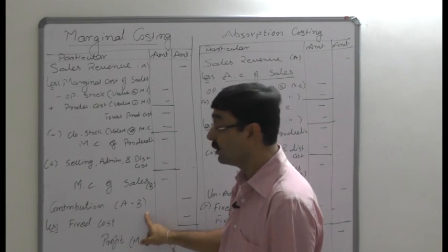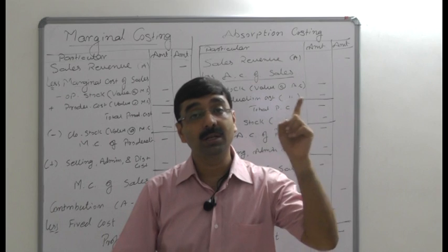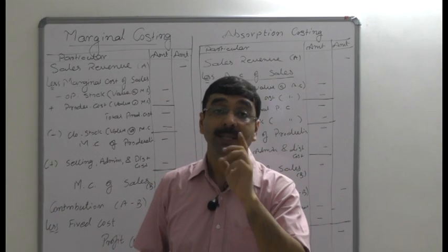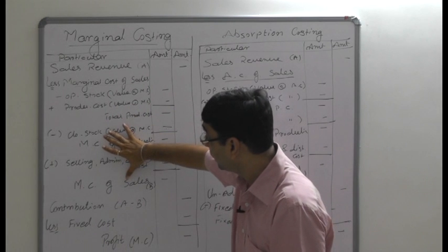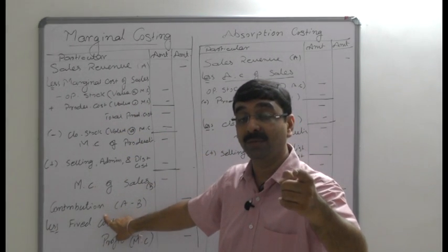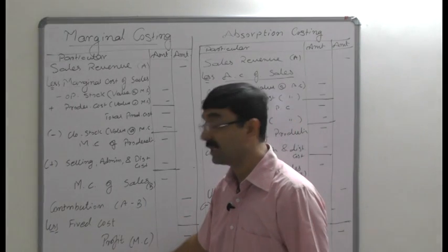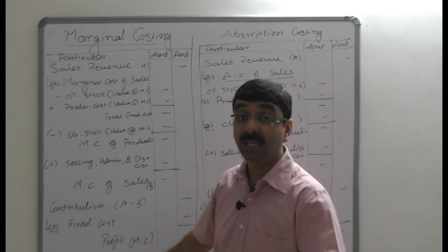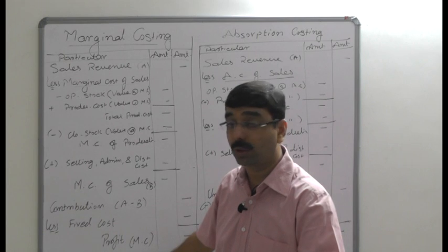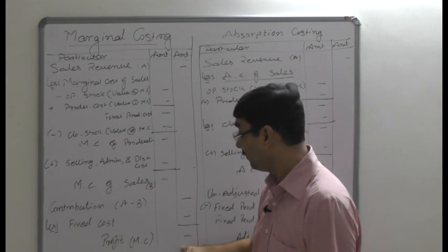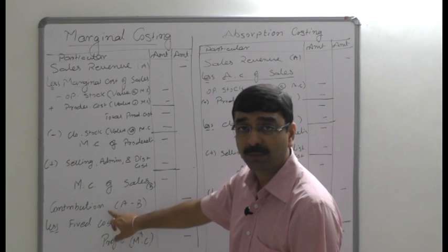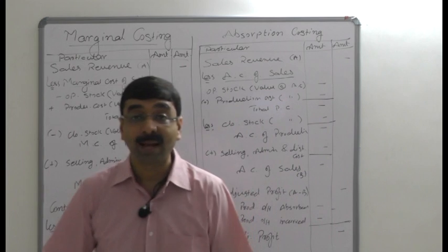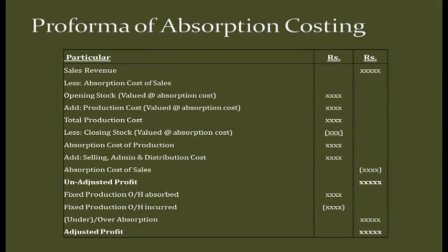The contribution is the difference between sales revenue and marginal cost of sales. Only variable costs are deducted to find contribution. The formula is: Contribution (C) = Fixed Cost (F) + Profit (P). In a break-even situation, contribution equals fixed cost with no profit or loss. When profitability exists, deducting fixed cost from contribution gives the profit. This is the marginal costing method.